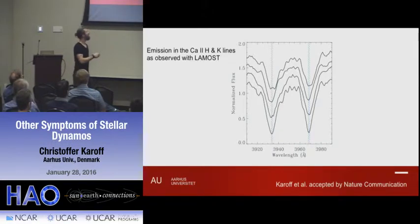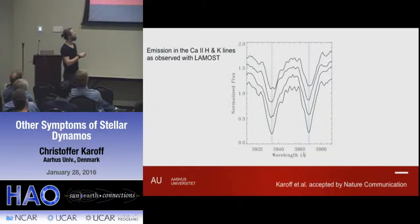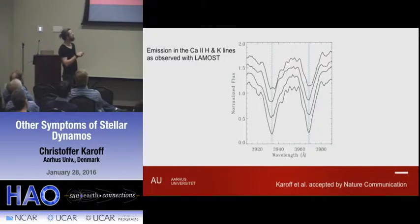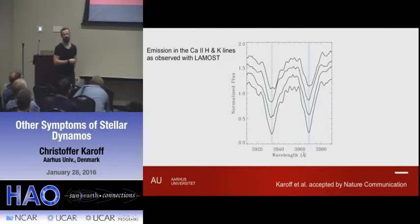Here are four examples of calcium H and K lines in stars I've measured from LAMOST. When we measure this chromospheric activity, we use something called the S-index. We measure the amount of flux in a 1-Ångström triangular bandpass here and here, then divide by some reference bandpass out here. You see four different stars with increasing activity level as you go up — they've been artificially shifted upwards to show them — and you start seeing filling-in in the middle of these lines.